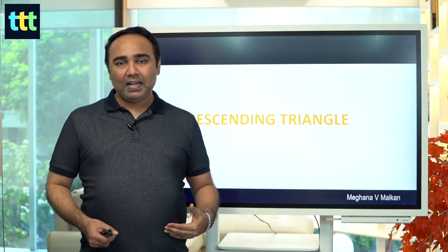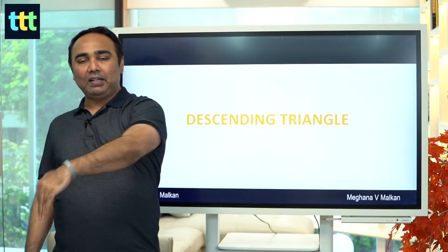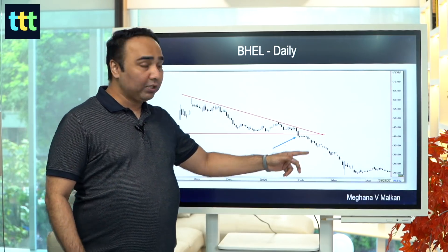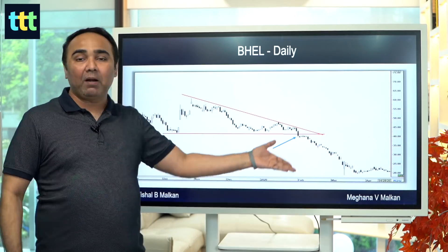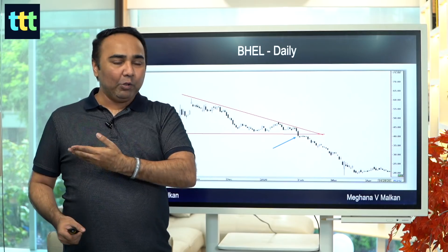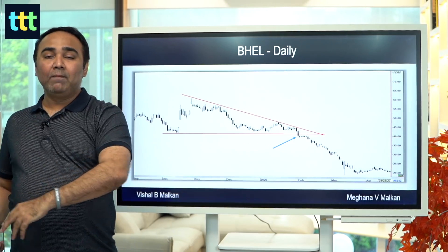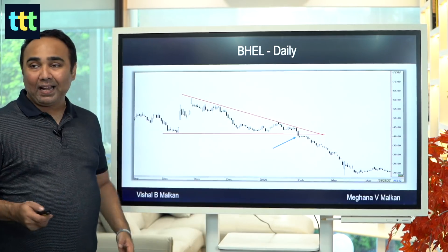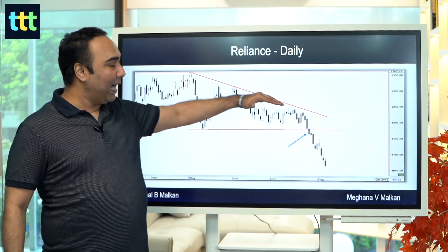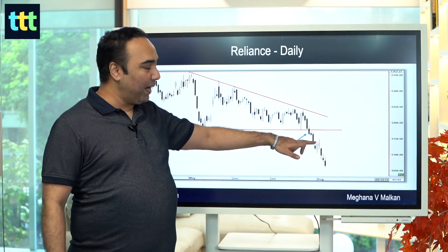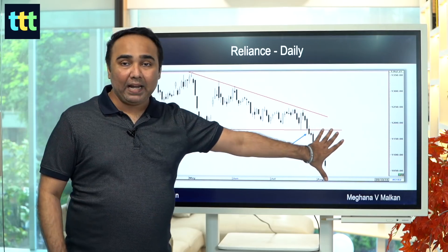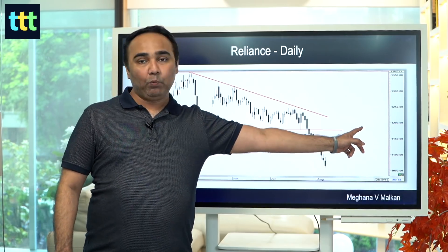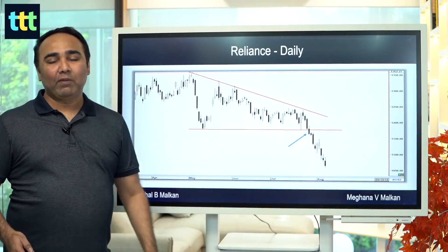Descending triangle — what happens in descending? The support is the same, the resistance comes down. That's like a descending triangle. It usually breaks down because it's already a bearish pattern making lower tops. Ascending usually breaks up, descending usually breaks down — and that's why they're called ascending and descending. They are more of trending breakout and trending patterns. The same target would be replicated. Volume should be there. It should break out well before the end of the triangle — it should not go till the vortex or center point.